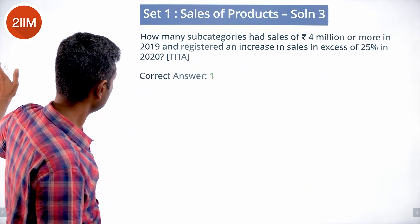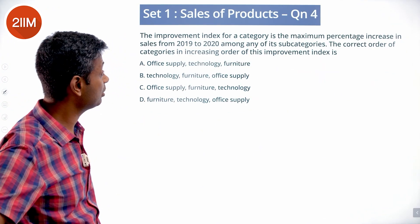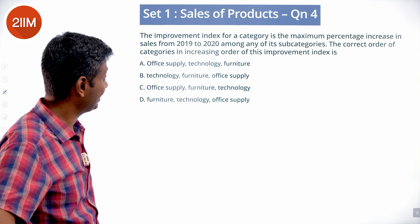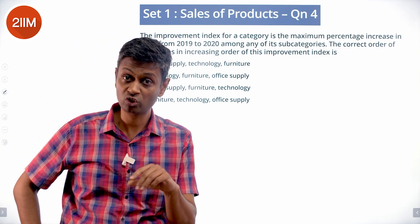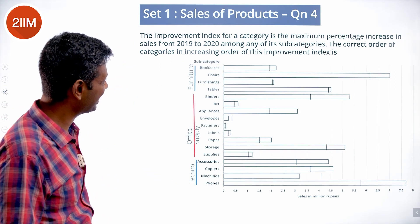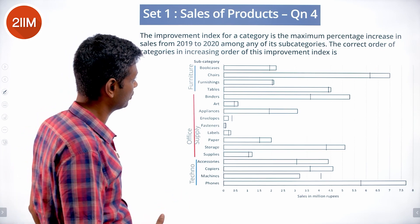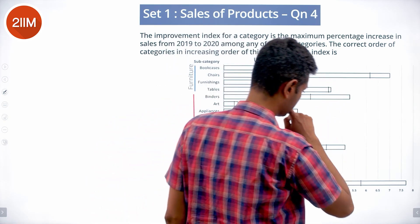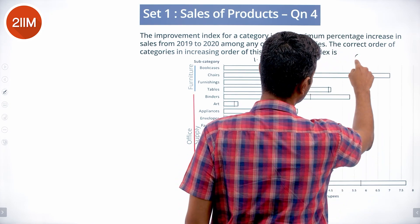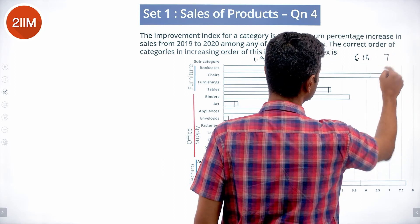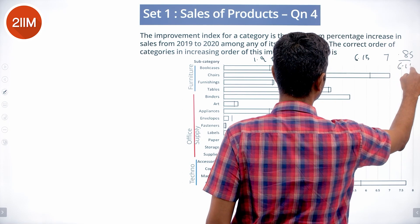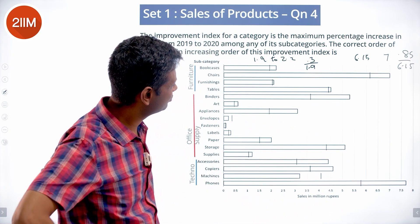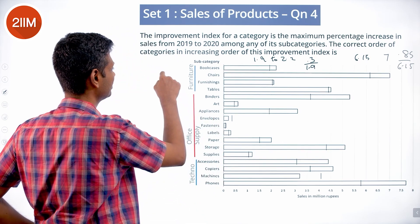The improvement index for a category is the maximum percentage increase in sales from 2019 to 2020 among any of its subcategories. We want the correct order in increasing order of this improvement index. For furniture: bookcases goes from 1.9 to 2.2 — that's 0.3 by 1.9, or about 15 percent. Chairs goes from 6.15 to 7 — that's 0.85 by 6.15, also around 15 percent. So furniture is around 15 percent.